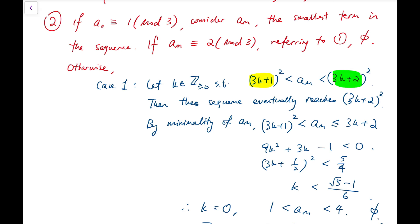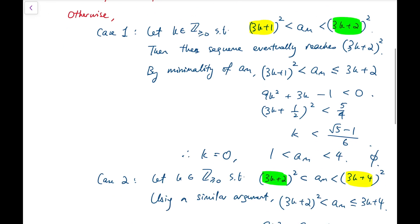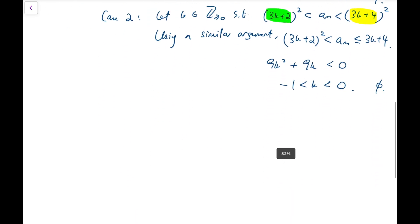From these results, we can never have the smallest term congruent to 1 mod 3 — it must be congruent to 2 mod 3 — so we always return to Case 1. Therefore there is no solution even when the first term is congruent to 1 mod 3.